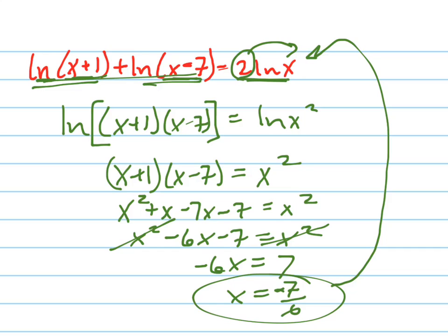So this does not actually have a solution. This particular equation, the red equation at the top, does not have a solution. Because when you try plugging in a negative into the argument of a logarithmic function, you get no solution. It's not in the real number system.